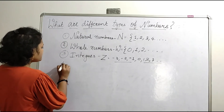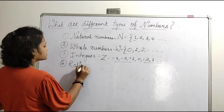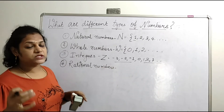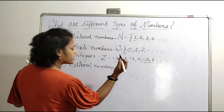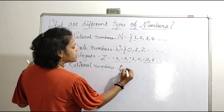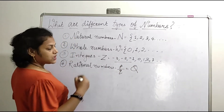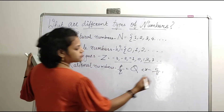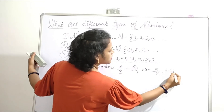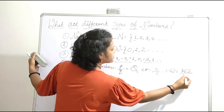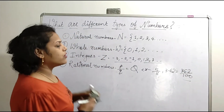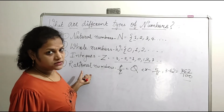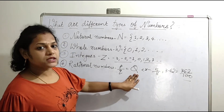Next, we will see about rational numbers. Rational numbers can be written in the form of a ratio — that is, p by q form — and are denoted by capital Q. For example, 5 by 8 is a rational number. Also, 3.62 can be written as 362 by 100, which is again in ratio form. So rational numbers have a numerator and denominator, written in p by q form.